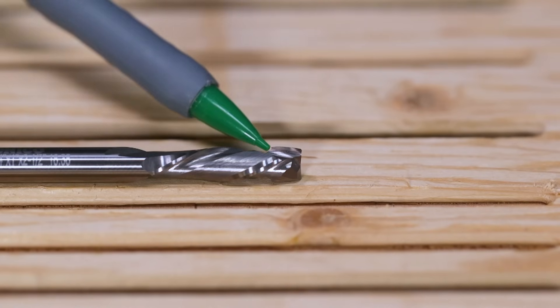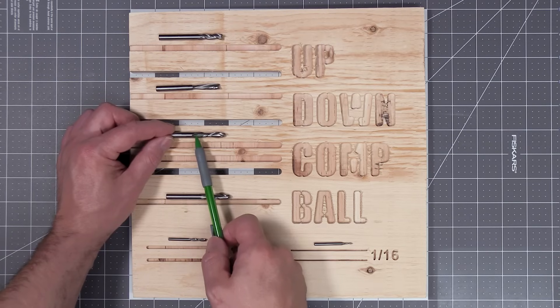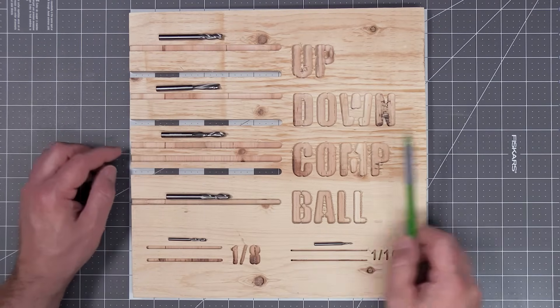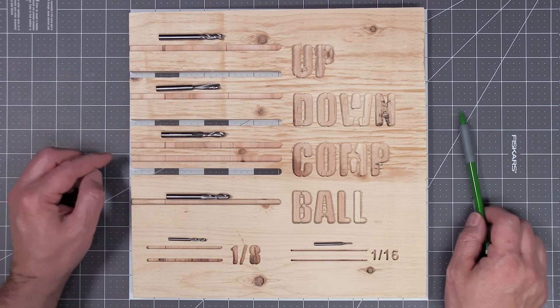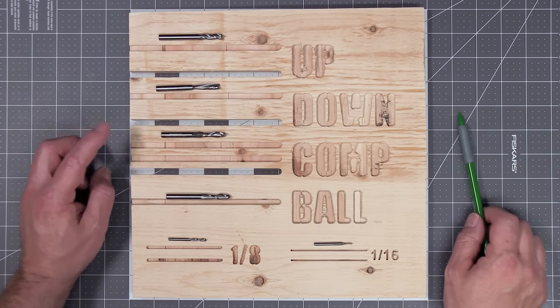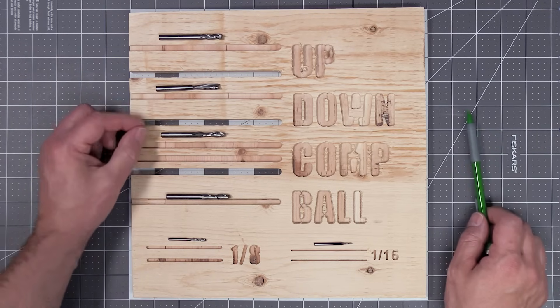On this particular bit, the first one quarter of the bit is up spiral and the rest is down spiral. In theory, this allows you to have the best of both worlds, so you get a clean cut on the top and bottom of your work piece without any tear out.